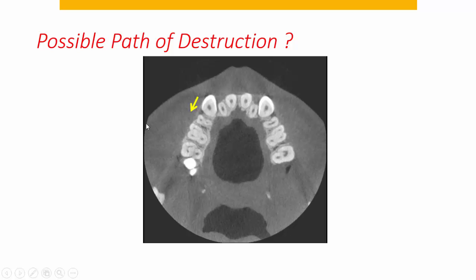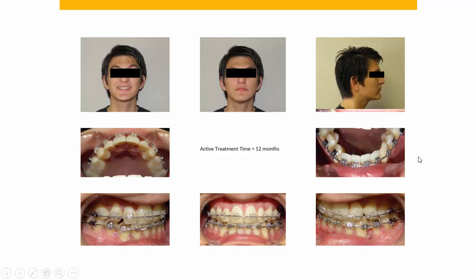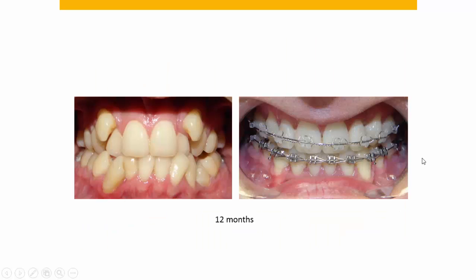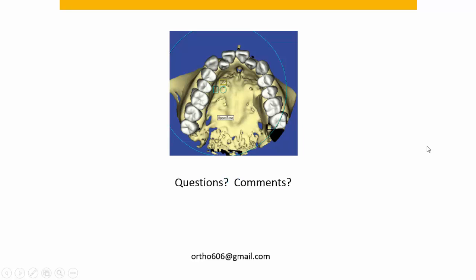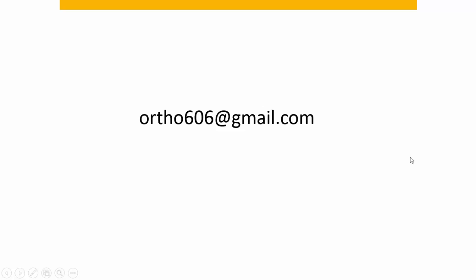Based on the path the upper cuspids needed to travel, I extracted the upper cuspids versus the upper first bicuspids. You can see that with the width of the tooth, it just wasn't going to fit back in that area. At 12 months into treatment, everything is lined up and there does not appear to be any additional tissue stripping. Unfortunately this patient disappeared shortly after these photos, and I haven't seen him for about a year and a half — hopefully he'll come back and I can take his braces off and take another cone beam CT to confirm the decision. Thanks for listening — you can email me at ortho606@gmail.com.